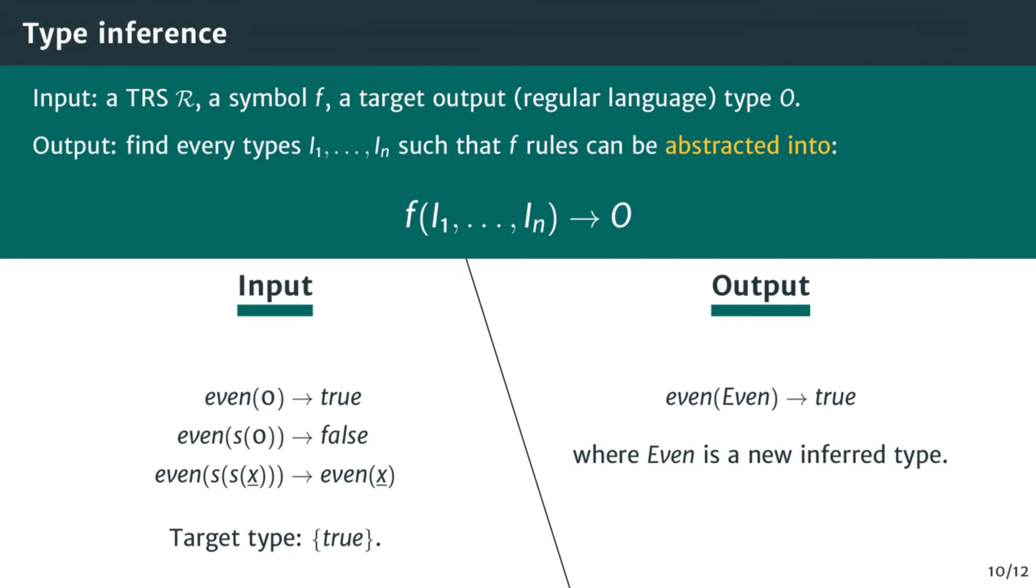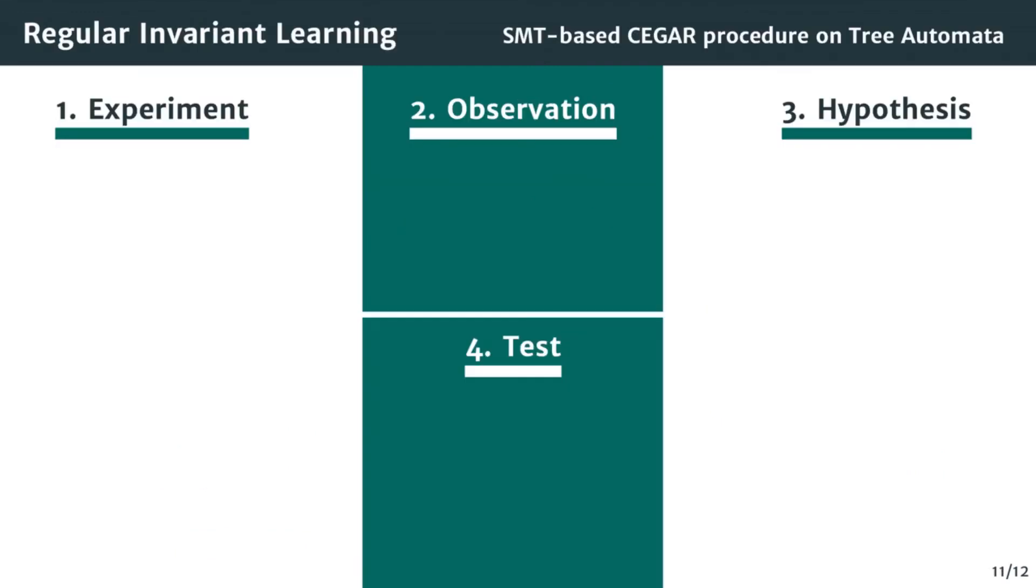For recursive functions such as this one, the type inference is done using an invariant learning procedure. In our paper, we define a counter-example guided regular invariant learning procedure based on tree automata completion and SMT solving. It consists in repeating 4 steps until it finds a solution or a counter-example. Step 1, we experiment. We evaluate some terms of the form F of T1 to Tn where F is the analyzed symbol and T1 to Tn some random input values.